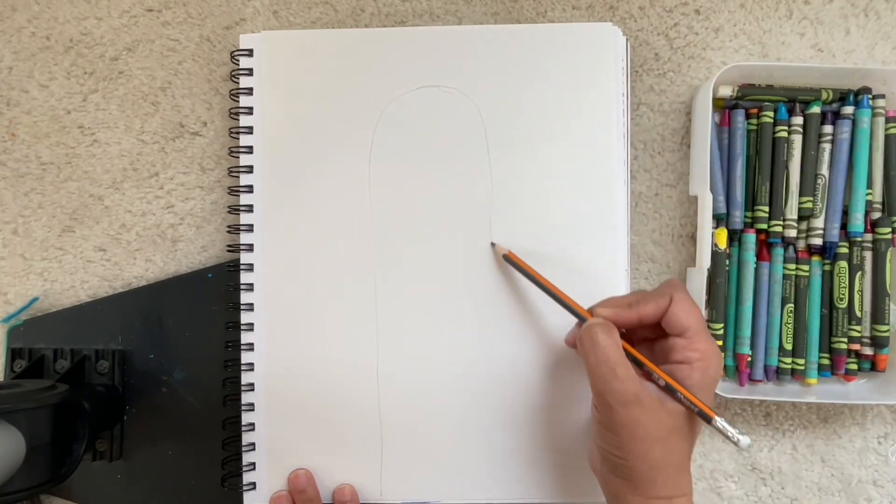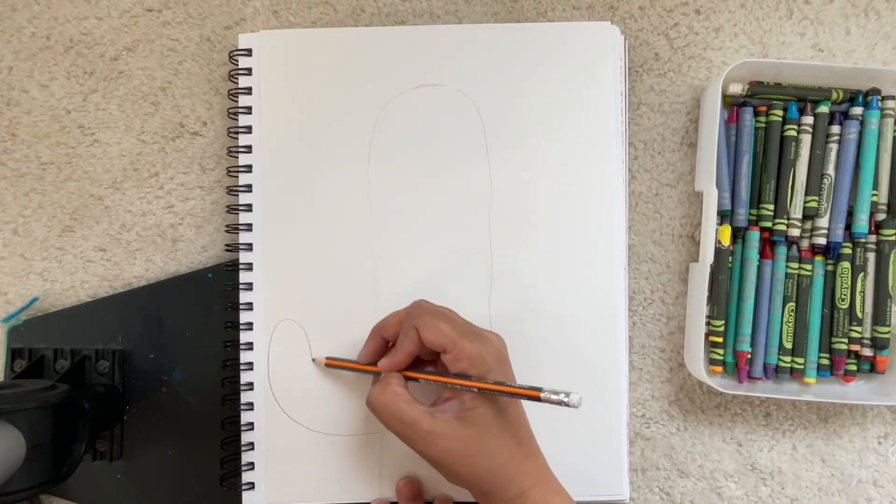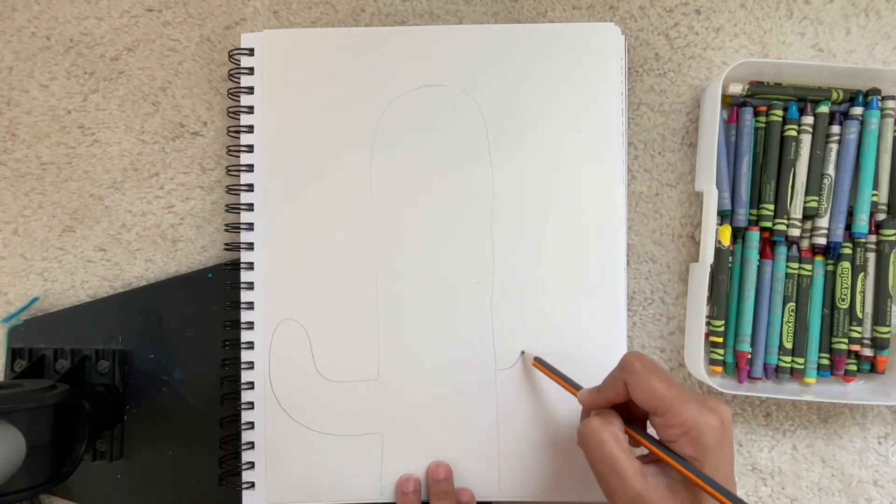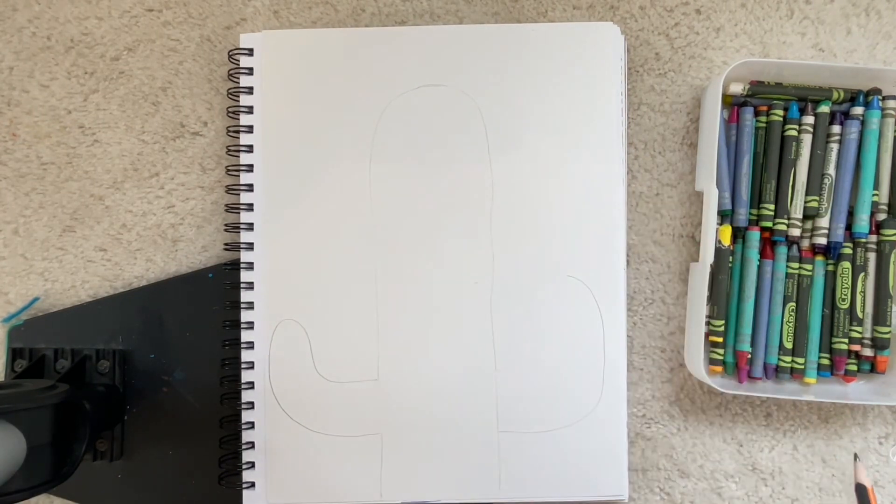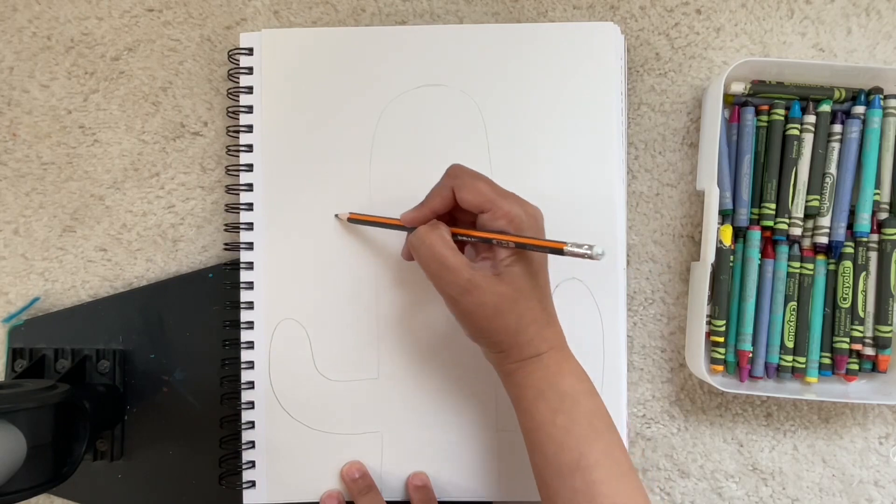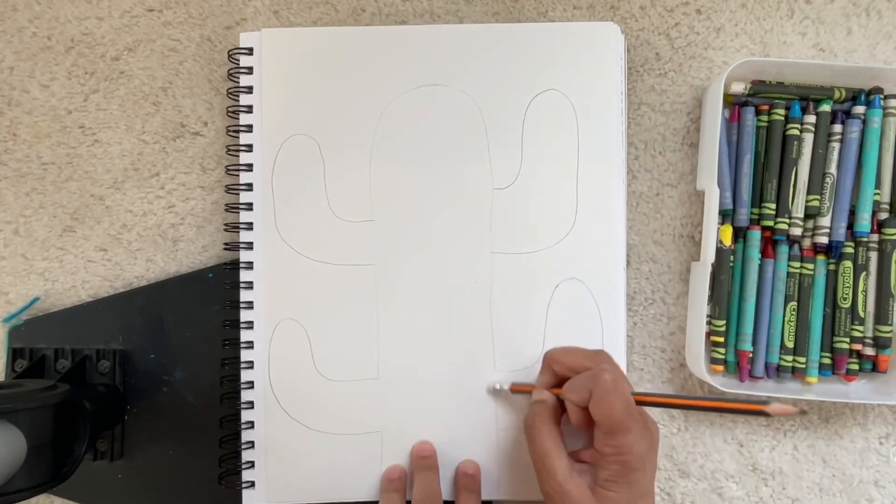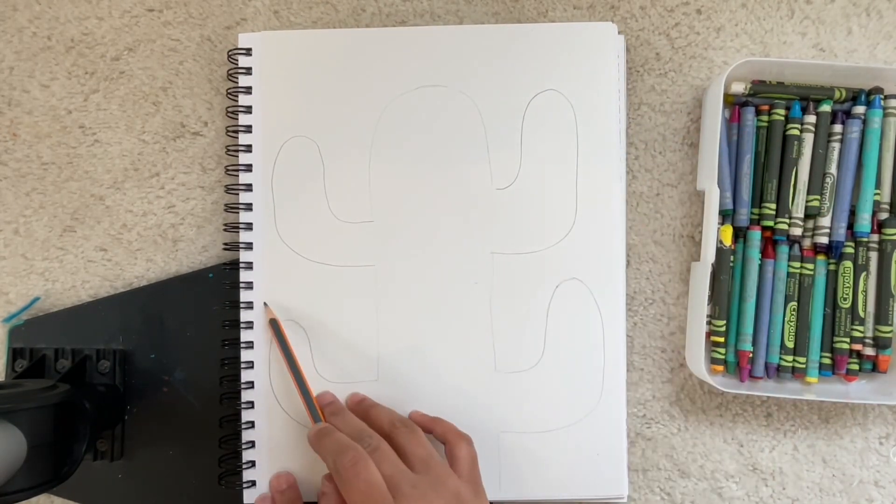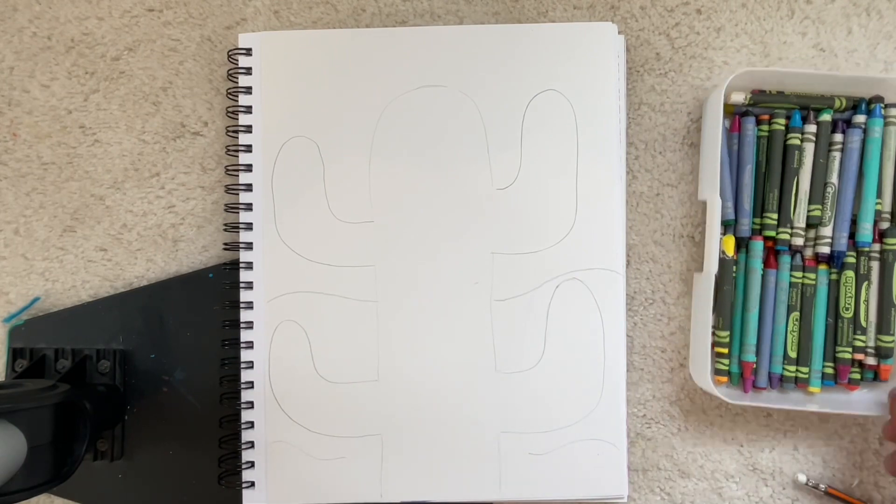So first you will take your pencil and draw a rectangle with a little bit of rounded at the top, and then you will draw your cactus sides. Once you're done with that you will go in and erase, draw some fun hills.